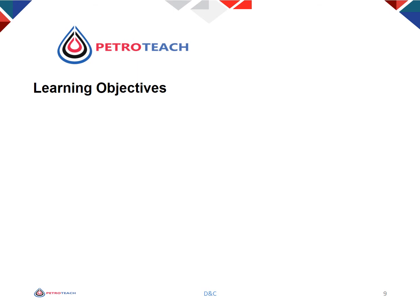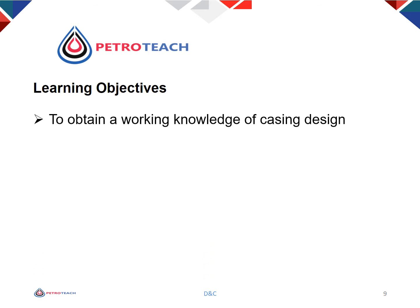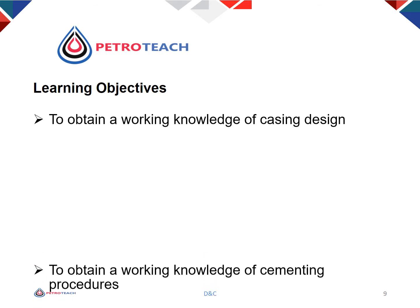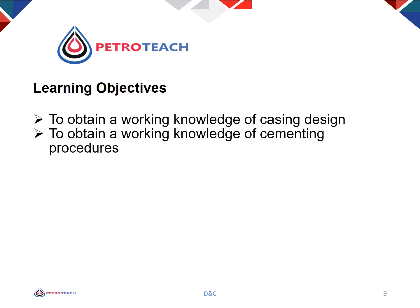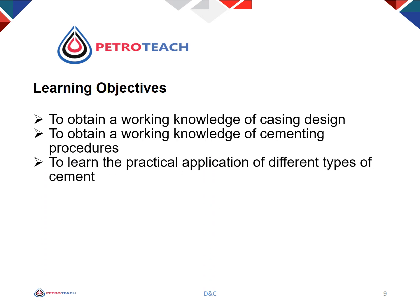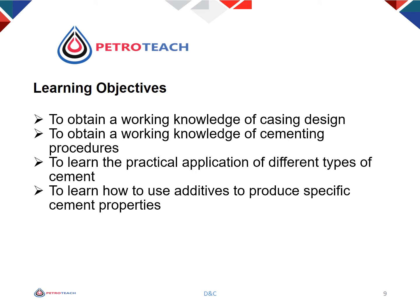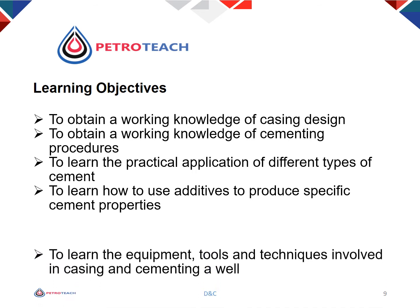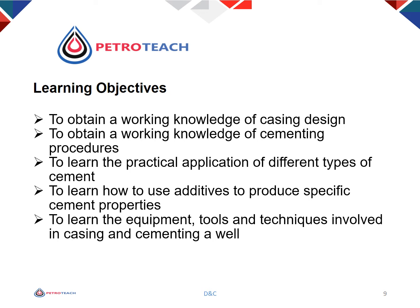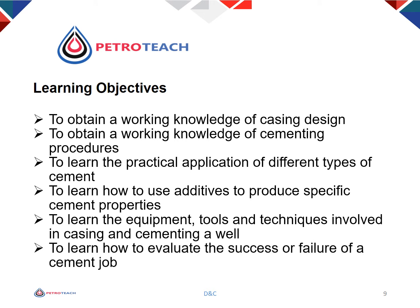The top level learning objectives of this course are: to obtain a working knowledge of casing design; to obtain a working knowledge of cementing procedures; to learn the practical application of different types of cement; to learn how to use additives to produce specific cement properties; to learn the equipment, tools and techniques involved in casing and cementing a well; and to learn how to evaluate the success or failure of a cement job.